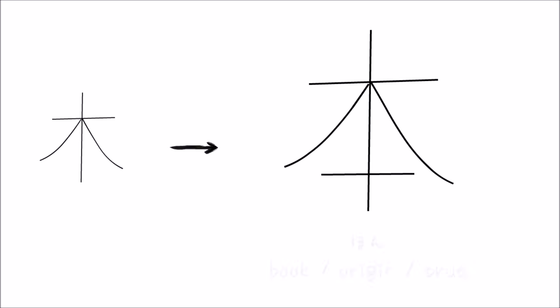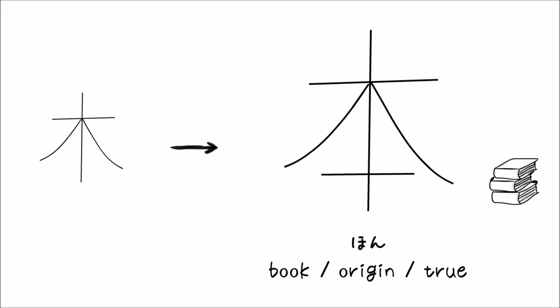If we add a vertical line to the kanji tree, we get the kanji for book or origin. This one is strange because the onyomi hon — we immediately associate it with the meaning of book. So hon doesn't have to be in a compound word to mean book. An easy way to figure out if it's on or kun is that most of the time, when the reading has n at the end, it is an onyomi. Just remember this as hon. So: kore wa hon desu — this is a book.